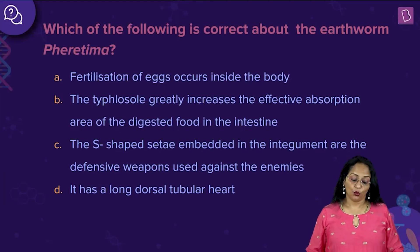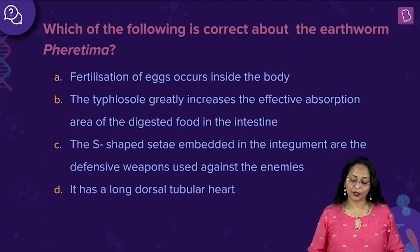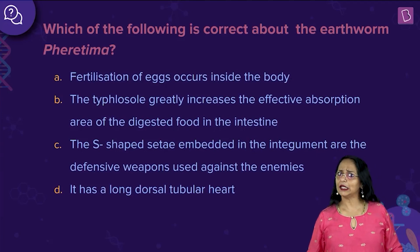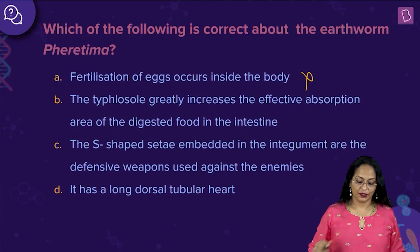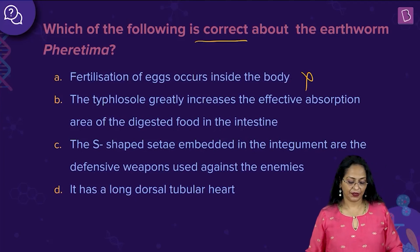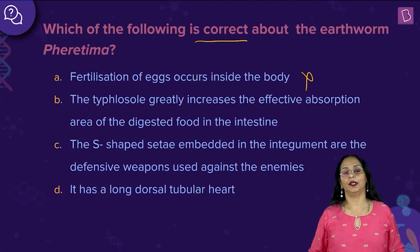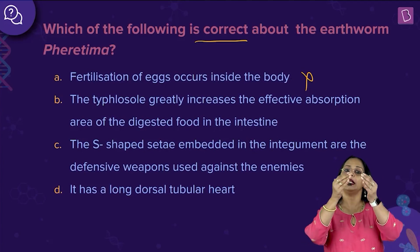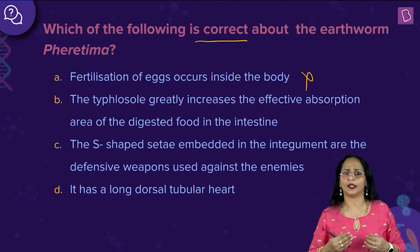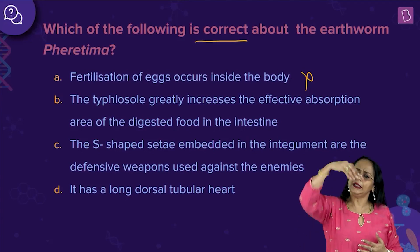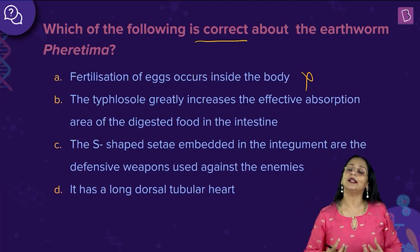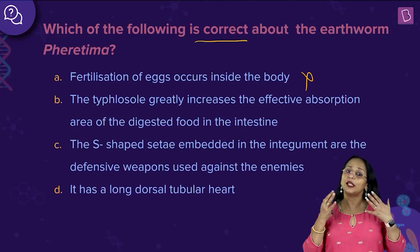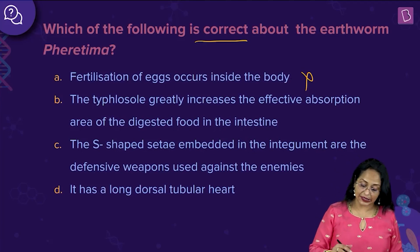Let us now look at a new question: which of the following is correct about the earthworm Pheretima? Fertilization of eggs occurs inside the body — does it? No, it occurs in the cocoon, so this is wrong. The Typhlosole greatly increases the effective absorption area of the digested food in the intestine. What is a Typhlosole? It is an ingrowth of the dorsal wall of the earthworm, present from the 26th segment onwards till almost the end, hanging into the cavity and increasing surface area for absorption of digested food. So this option is correct.